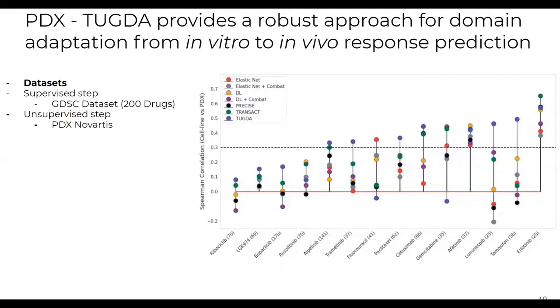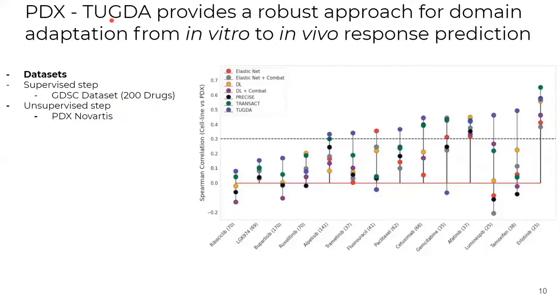Here, we reported TUGDA results for transfer cancer drug response from cell line to PDX. So, in the supervised step, we trained TUGDA using GDSC. And in our unsupervised step, we used PDX from the Novartis dataset. We tested the model performance in 14 shared drugs between GDSC and PDX by computing the Spearman correlation between GDSC AUC predictions and PDX best average response.